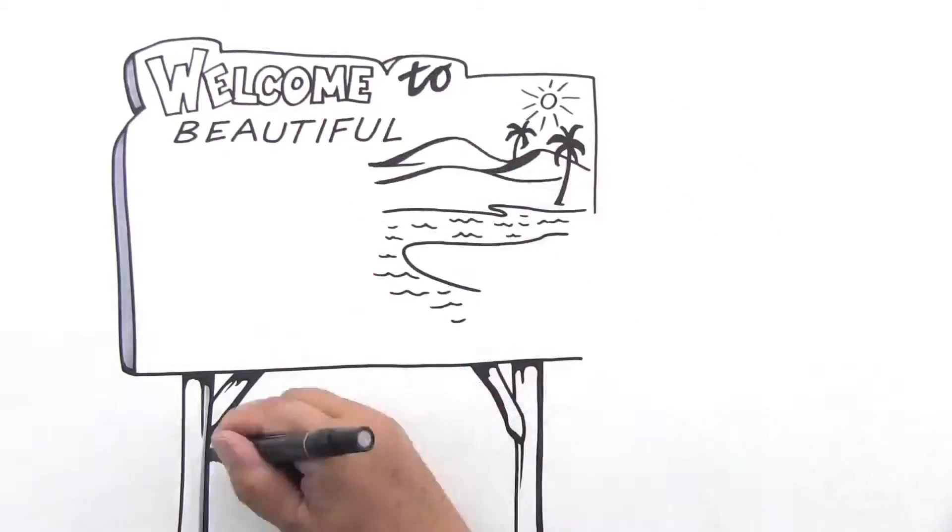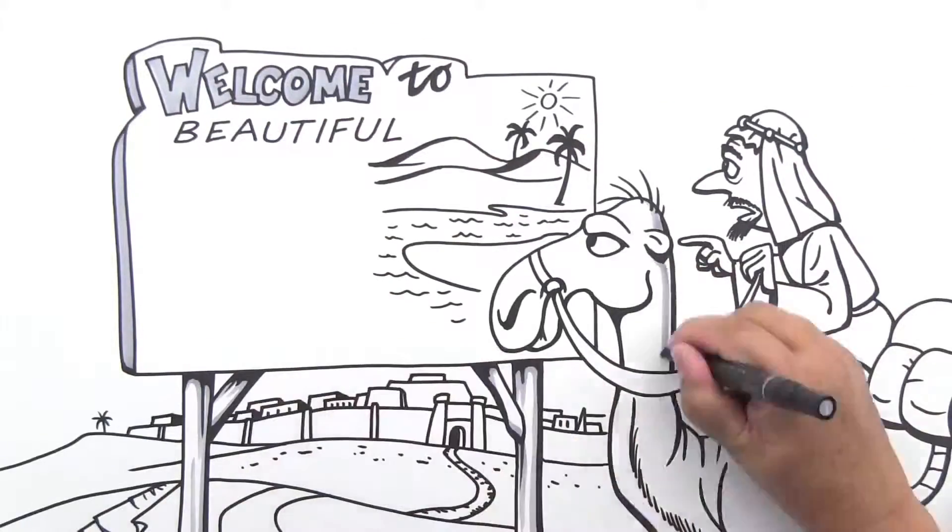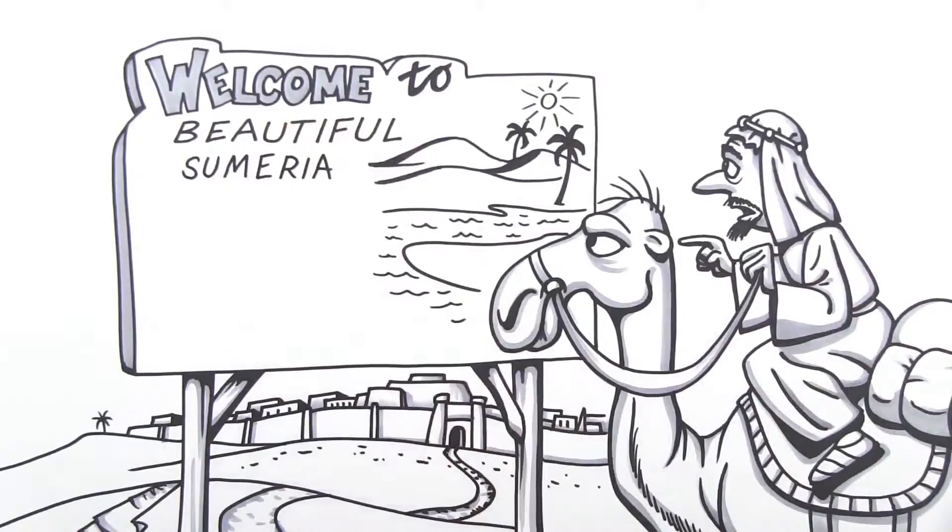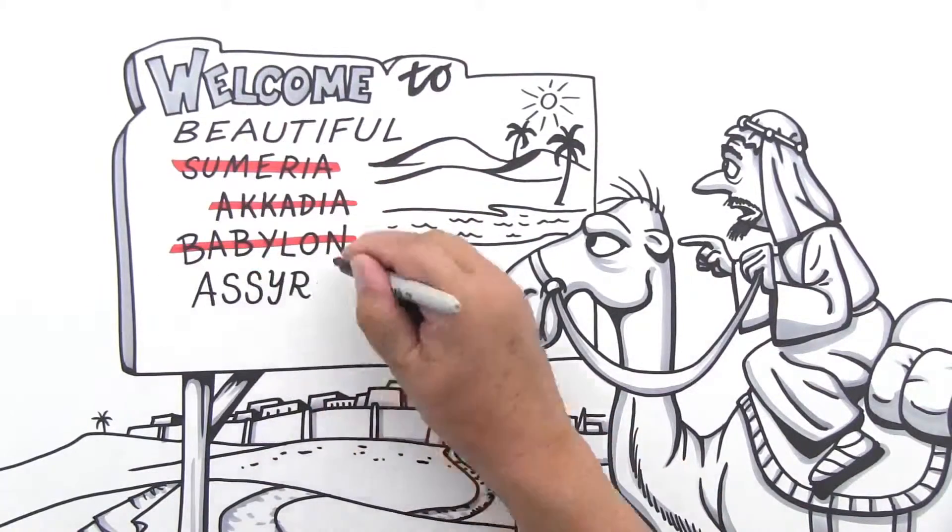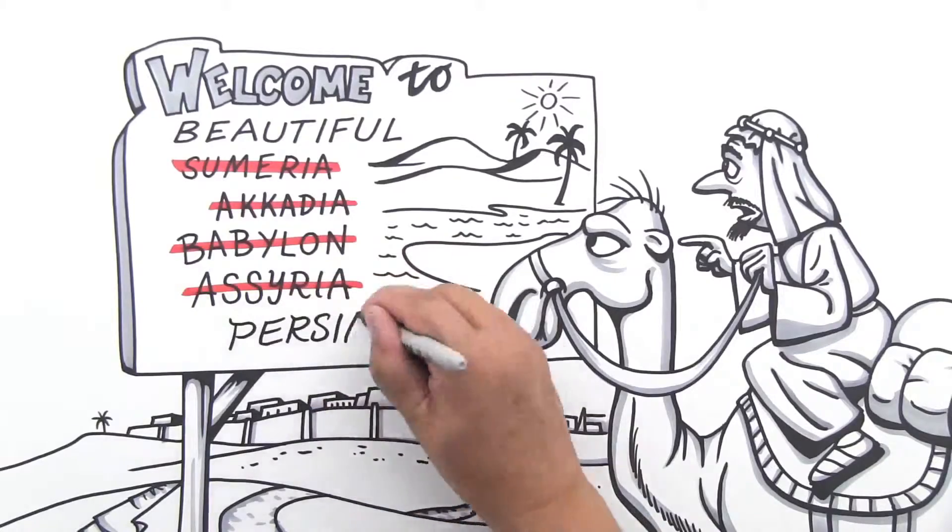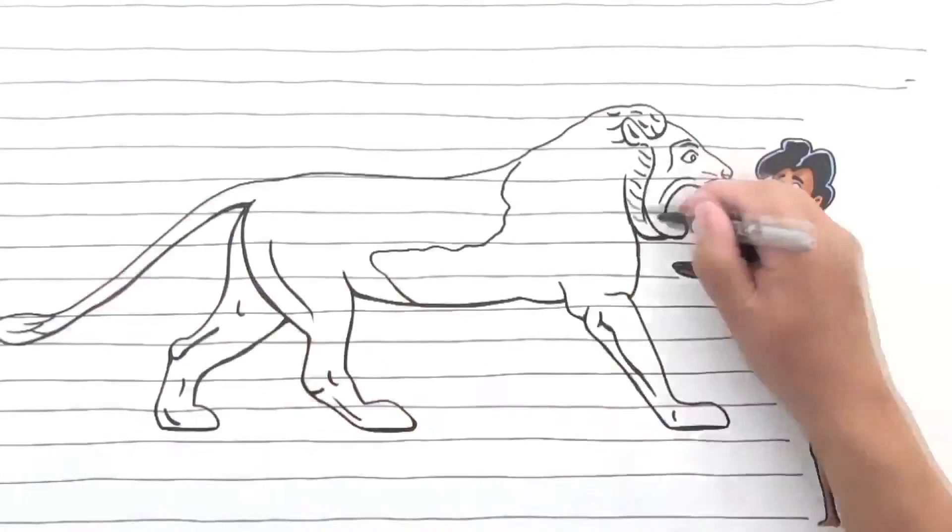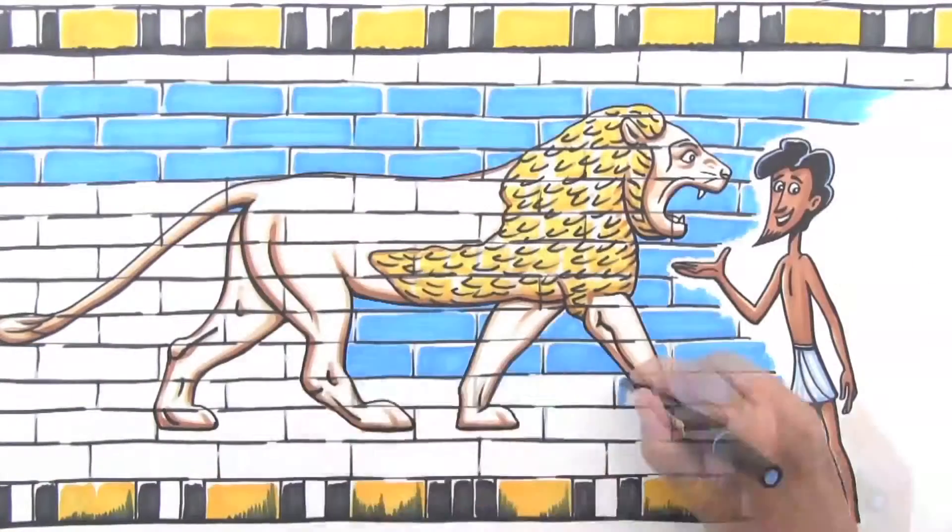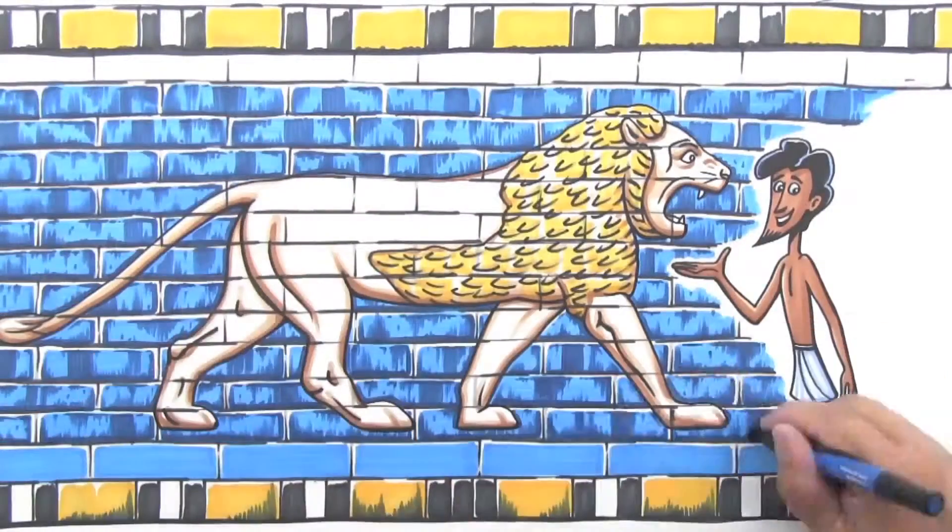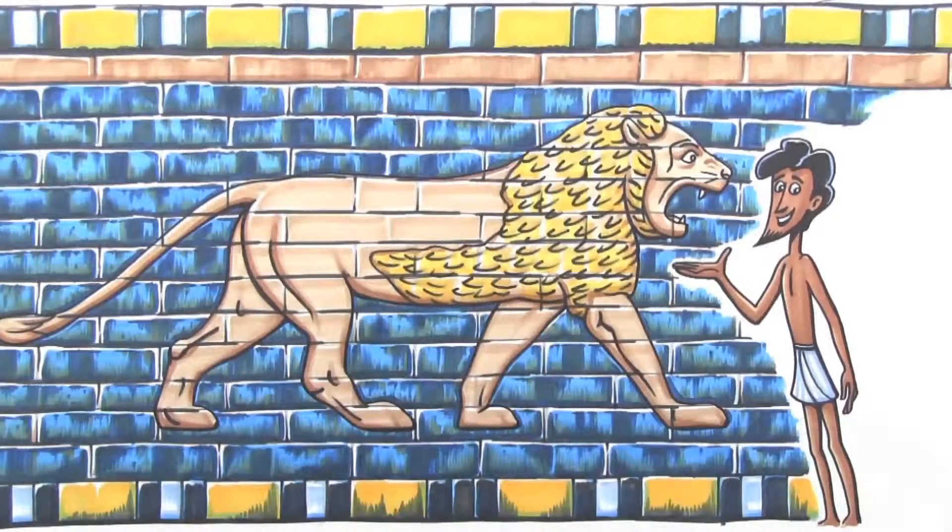Mesopotamia actually refers to an area rather than a country. At different times, it was ruled by the Sumerians, the Akkadians, the Babylonians, the Assyrians, and the Persians. They lived close to the natural world, and like this lion that decorated the walls of the Ishtar Gate, their animal art was pretty realistic.